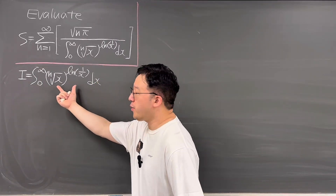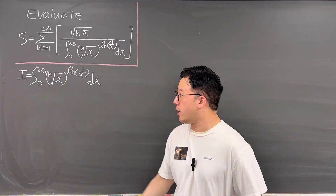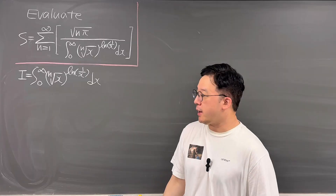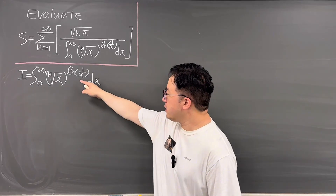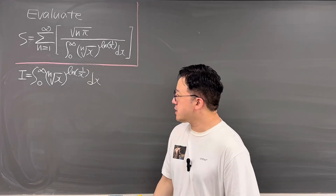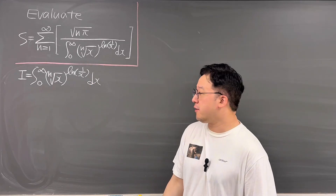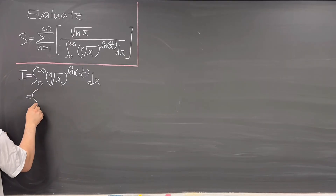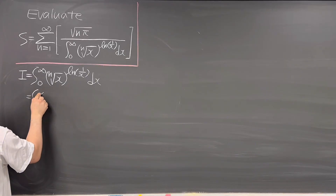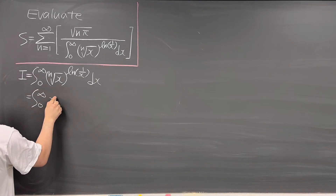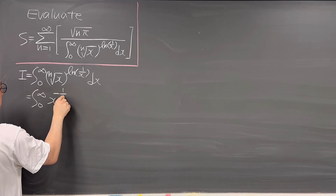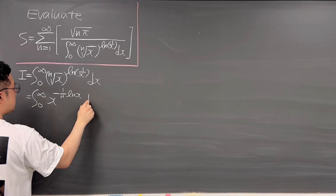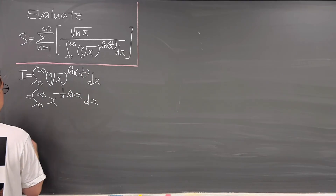Especially when you evaluate this integral on the denominator, you will see the Gaussian integral. So let me call I as this integral from 0 to infinity of the nth root of x to the power of ln(1/x) dx. Let me rewrite this integral: the nth root of x is x to the power of 1/n, and ln(1/x) is negative ln(x). So we have the integral from 0 to infinity of x to the power of negative (1/n) times ln(x), dx.